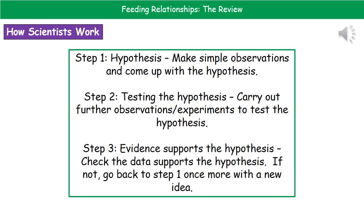The last thing we need to consider is how scientists actually work. First, we come up with a hypothesis — we make simple observations and come up with our theory about what's happening. Step two is to test that hypothesis by carrying out further observations or experiments. The third and final stage is to check whether the evidence actually supports it — does the data we've collected support our hypothesis, or do we need to go back to step one with a new hypothesis?